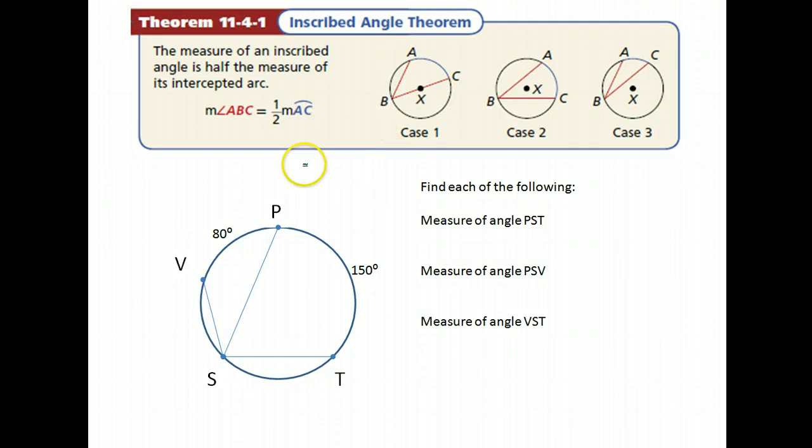All right, so let's talk some more about inscribed angles. Remember that an inscribed angle is any angle that has its vertex on the circle. So in this case here, here is angle ABC, vertex on the circle and its sides are chords for the circle. Each of these three cases that they give you here show an inscribed angle.